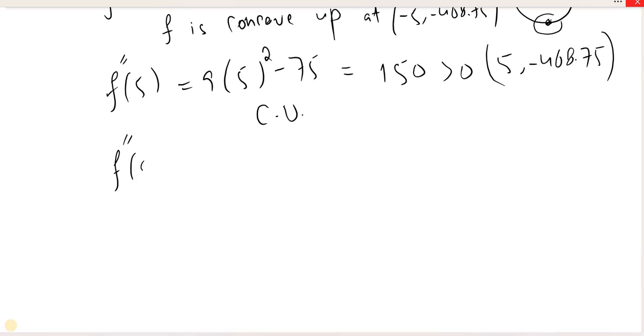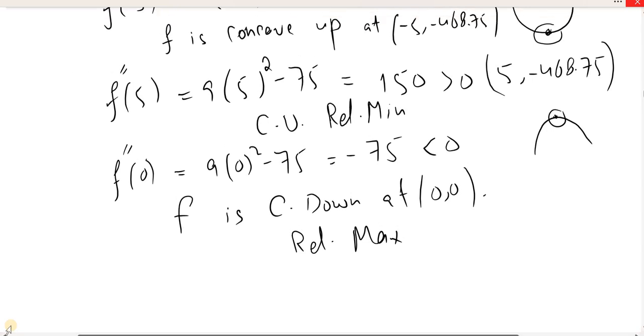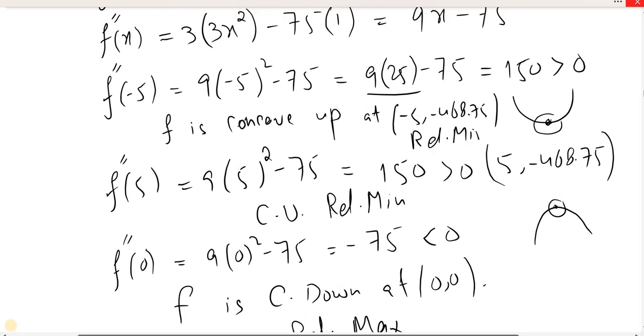And final one is 0. 9 times 0 square minus 75, answer is minus 75 which is less than 0. That means concave down. Yeh point 0, 0, iske upar concave down hai. Iske matlab, is tarah hoga. To yeh point kya hoga, relative maximum. Concave down at 0, 0. 0 ke upar kya hai, concave down hai, that means ki is point kya hai, relative maximum. Iske upar kya hai, relative minimum, aur iske upar bhi kya hai, relative minimum. Thank you.